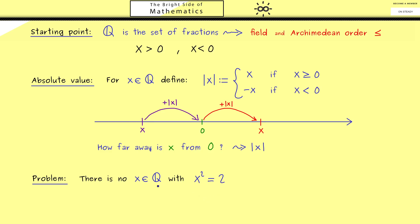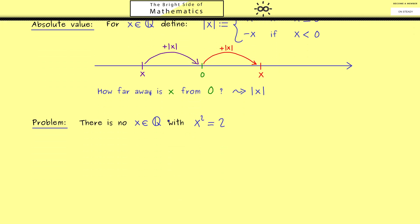Showing this is a good exercise which is often presented when you start with the real numbers. You should see that this result is a little bit strange, because we don't have a problem when there is a 1 or a 4 on the right hand side. Also you find rational numbers that are very close to this hypothetical x. For example let's start with x1 which should be 14 over 10, which is the same as 7 over 5. That gives us x1 squared equal to 49 divided by 25.